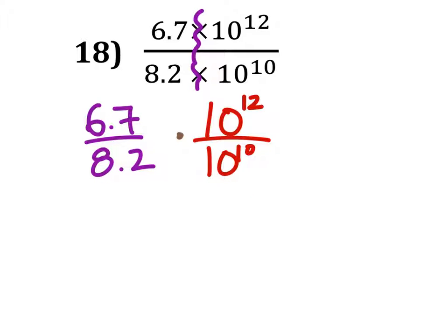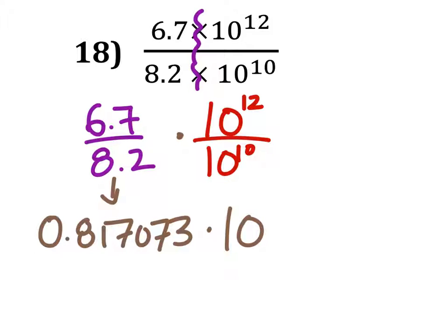Yeah, that's great. 6.7 divided by 8.2 is 0.817073 times 10, and this is the quotient rule. 12 minus 10, just with the powers.